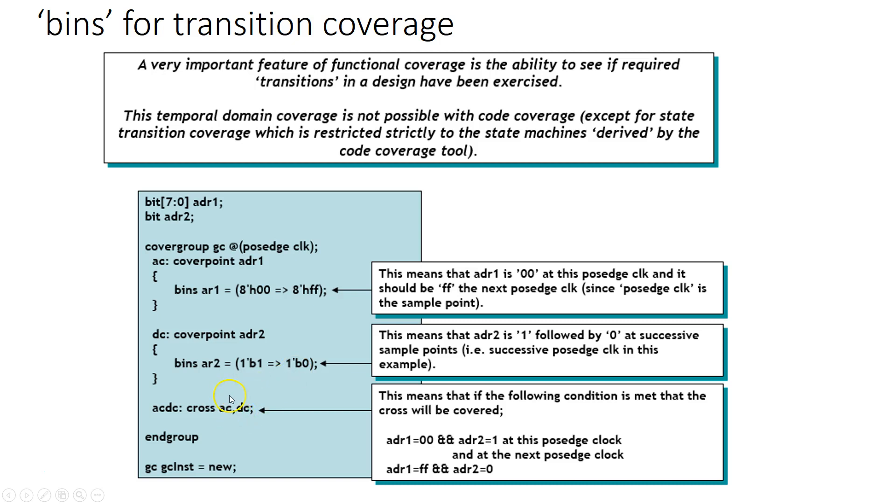Now what I've done is something interesting. I've done a cross of these two cover points, cover point AC and cover point DC. Each of these cover points has transition coverage in it. The way this cross of transition will work is you look at the very first value of each transition in each cover point, which is 8'h00 and 1'b1. That means at this positive edge of clock if address one is 8'h00 and address two is 1'b1, the next clock we should have address one going to 8'hFF and address two going to 0. So this is an interesting way of crossing even the transitions.